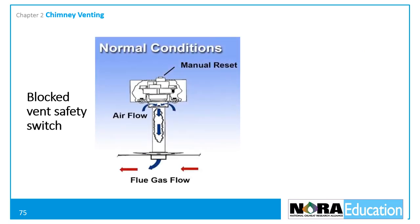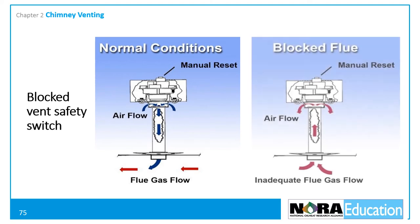In the first illustration, flue gases flow from right to left and draft is sufficient to pull air through openings in the switch housing assembly, keeping the sensor at ambient room temperature. In the second illustration, flue gases are not flowing through to the chimney and are pushing up against the sensor. In this situation, the sensor will overheat and power to the burner will be shut off.